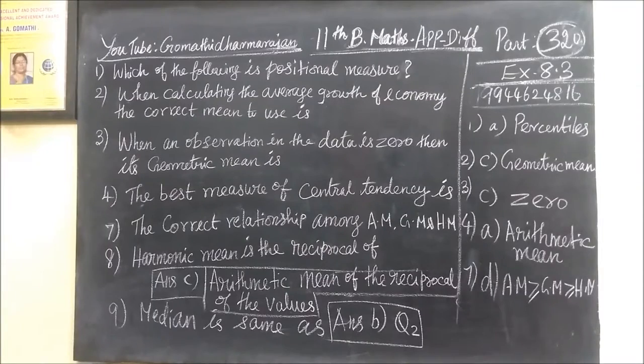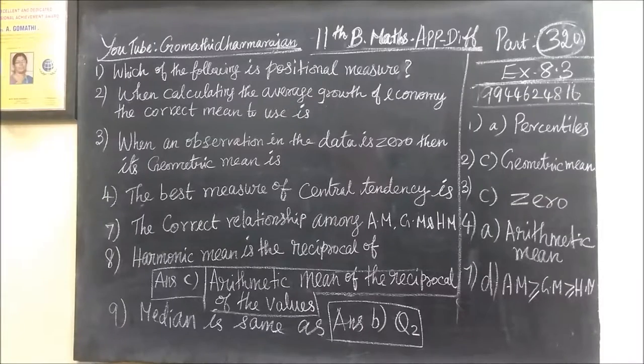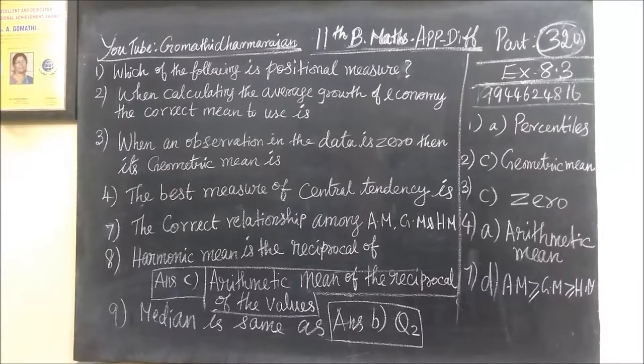Then the second one is, when calculating the average growth of economy, the correct mean to use is the geometric mean. Then the third one, when an observation in the data is zero, then its geometric mean is zero.